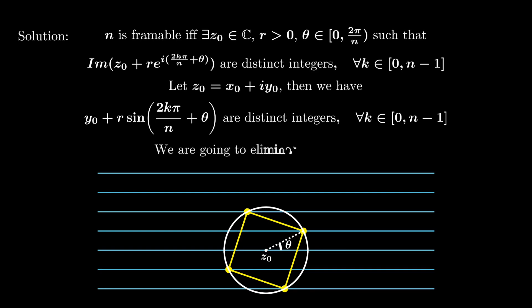As you can see, we need to deal with these additional parameters y₀, r, and θ. But what we really want to show is a property about the number n. So the idea is to eliminate these parameters one by one.